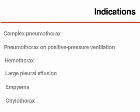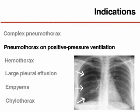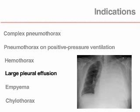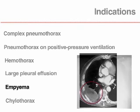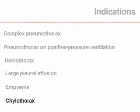The most common indications for chest tube drainage are pneumothorax that is recurrent, persistent, under tension, or bilateral; any pneumothorax in a patient on positive pressure ventilation; hemothorax; recurrent or symptomatic large pleural effusion; empyema; and chylothorax.